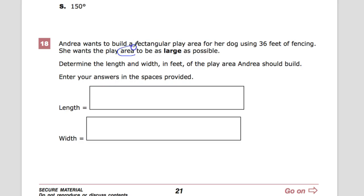The key word here is area, of course. Determine the length and width in feet of the play area Andrea should build. Now it has to be rectangular so we can't create circles or anything like that. And you'll find over time that the closer to a square that you can get, the better off you'll be in terms of overall area.